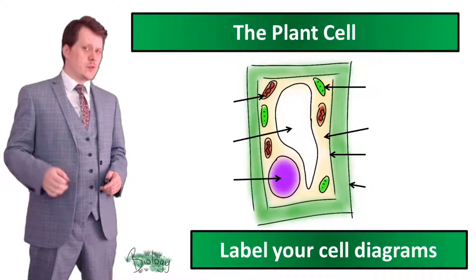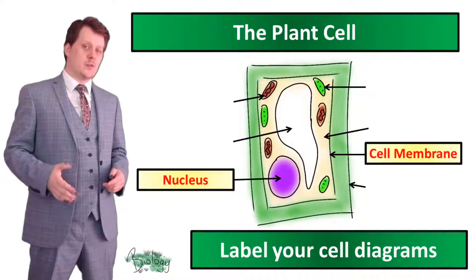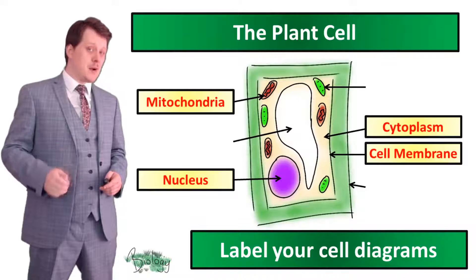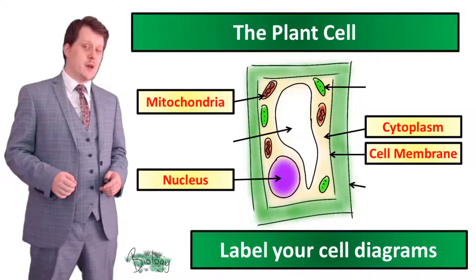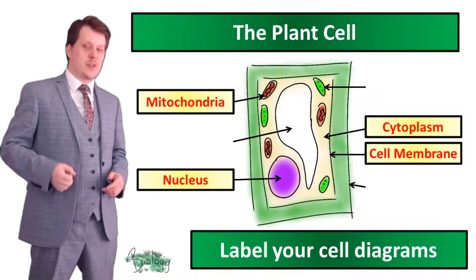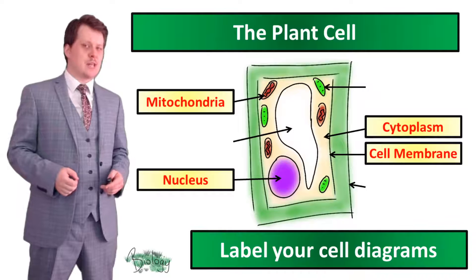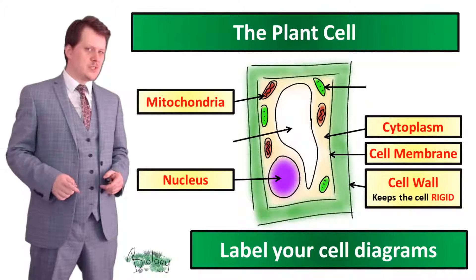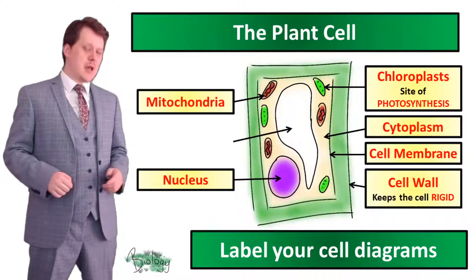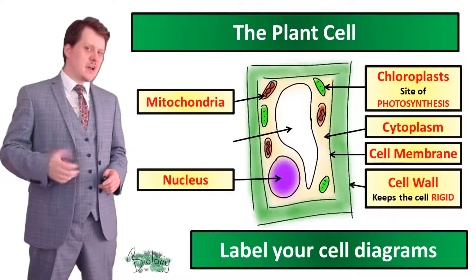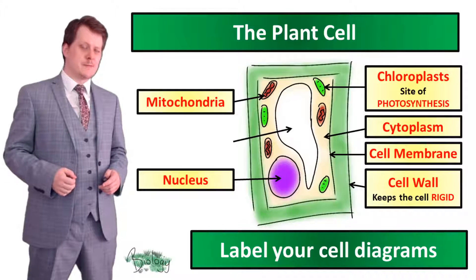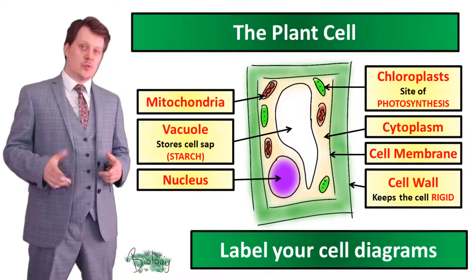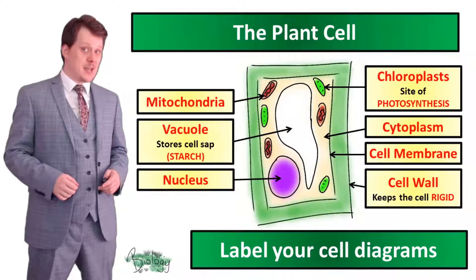The plant cell also contains a nucleus, a cell membrane, cytoplasm, and mitochondria. But there are three more things in our plant cell which weren't in our animal cell: the cell wall to add rigidity, chloroplasts which are the site of photosynthesis, and the vacuole which stores the cell sap.